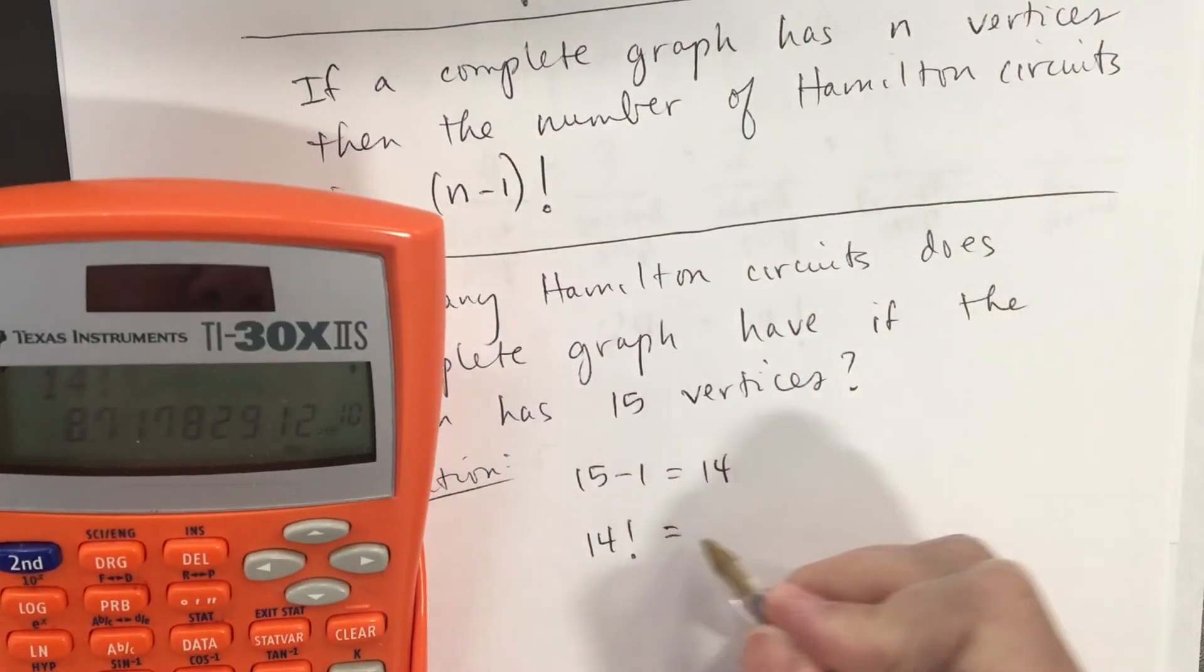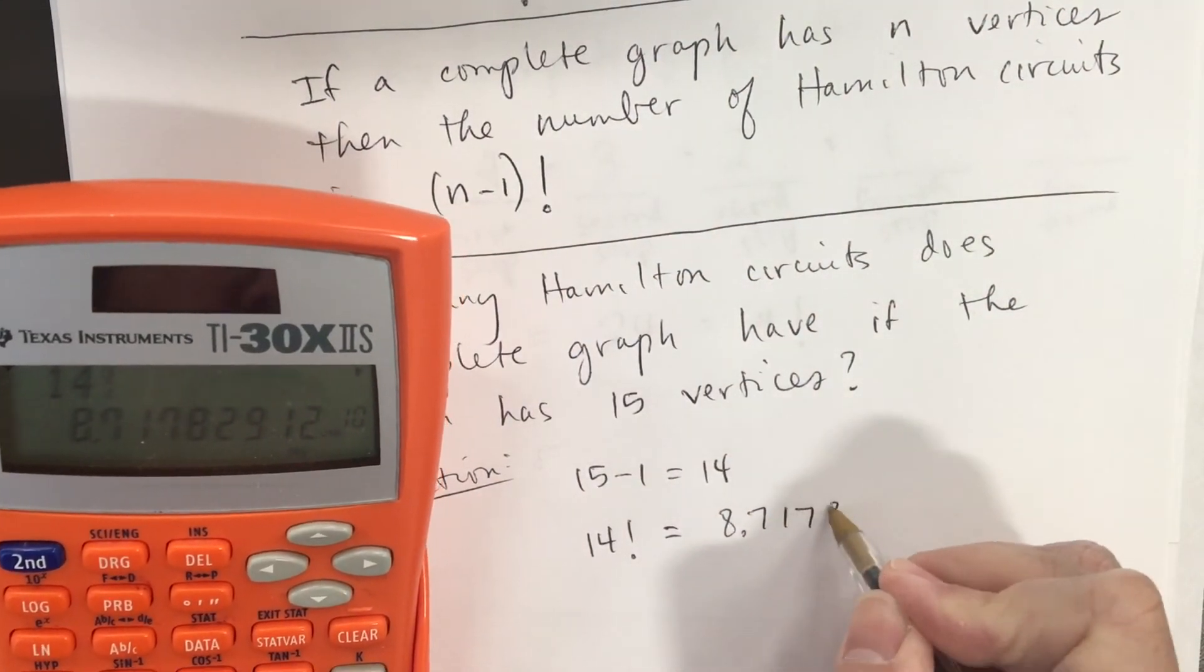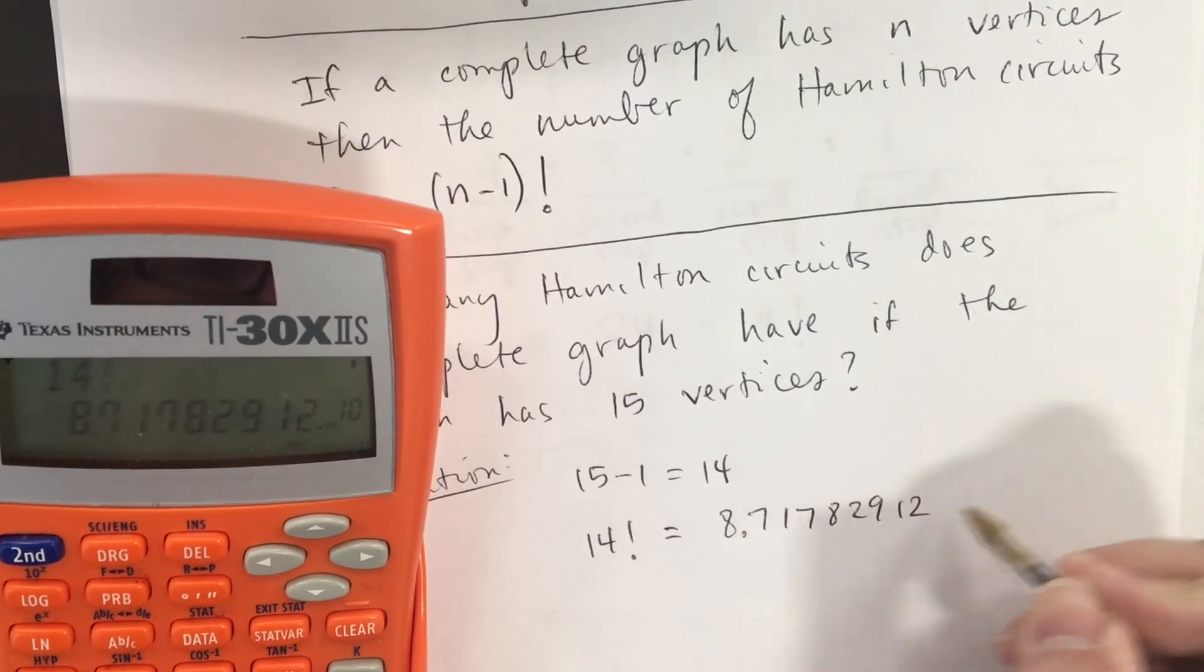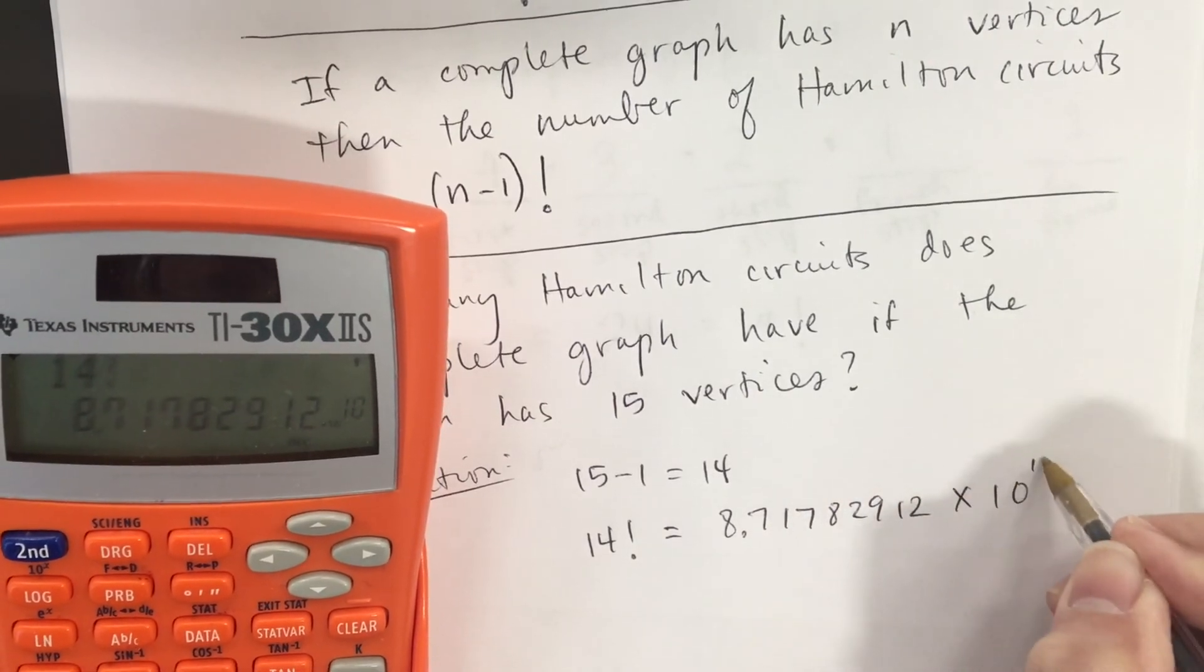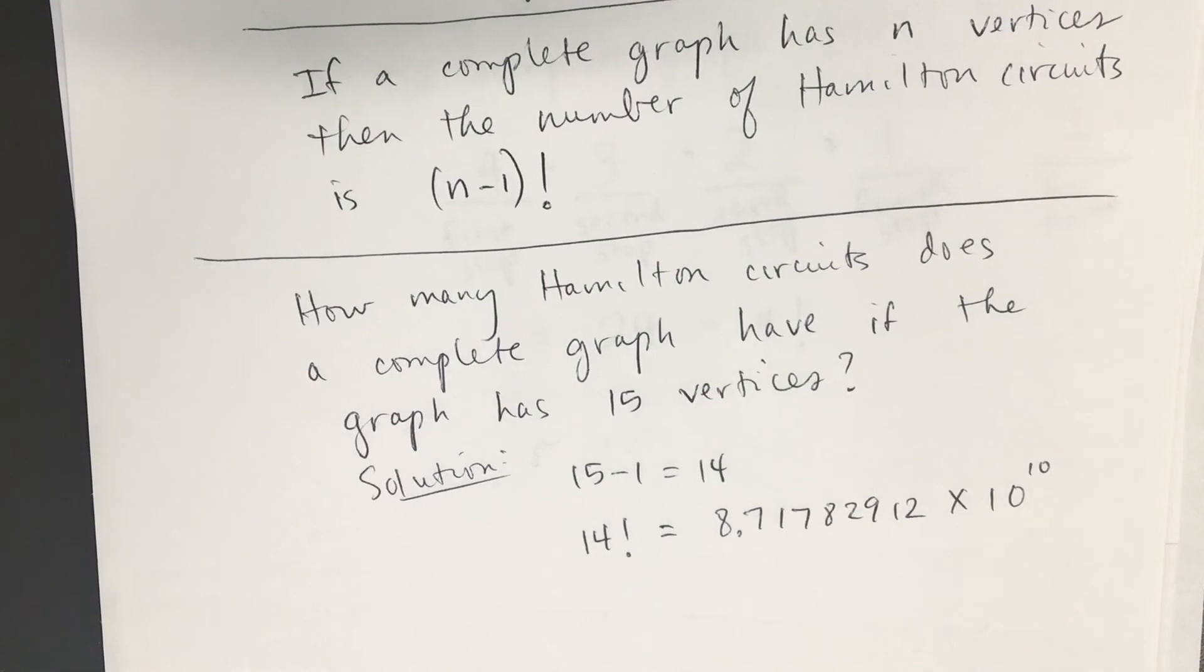And on this particular problem, they do not want you to type in scientific notation. They want you to convert that to standard form. So, I got 8.71782912 times 10 to the 10th power. I got it in scientific notation because the calculator wasn't capable of showing me all the numbers that are in the display if we're in standard form.